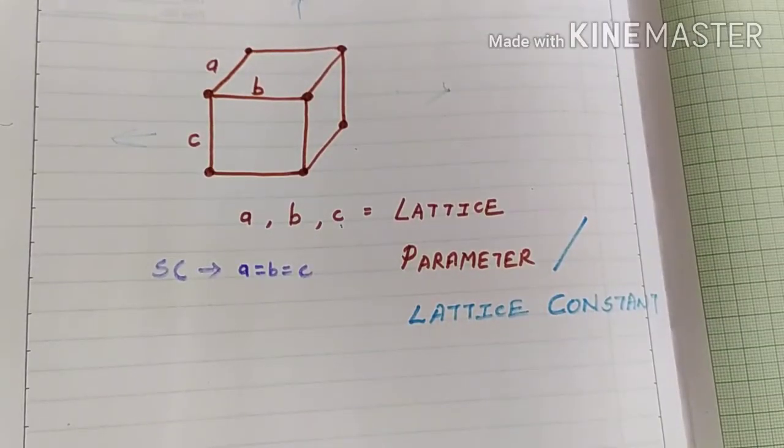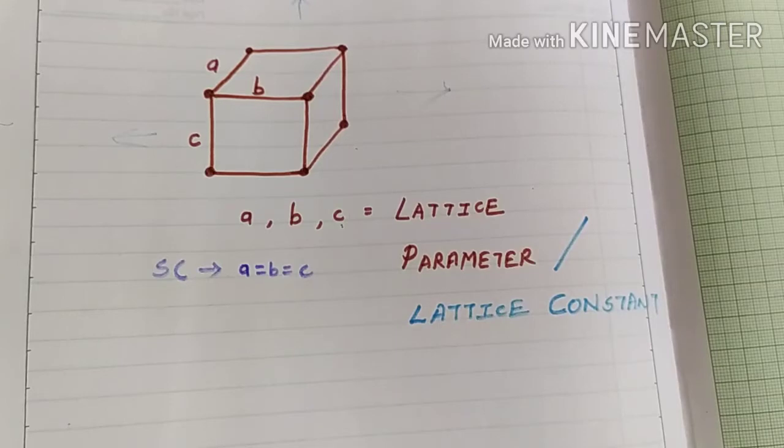Today we are going to study about lattice parameter or lattice constant, which is also called as crystallographic parameter. Before moving on towards Wegerd's law, this is a concept that should be clear. So before moving on towards lattice parameter, let's understand what is a unit cell.